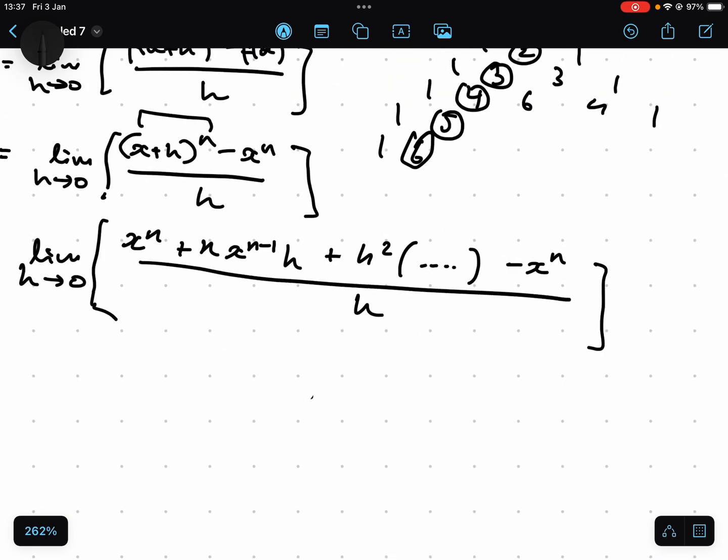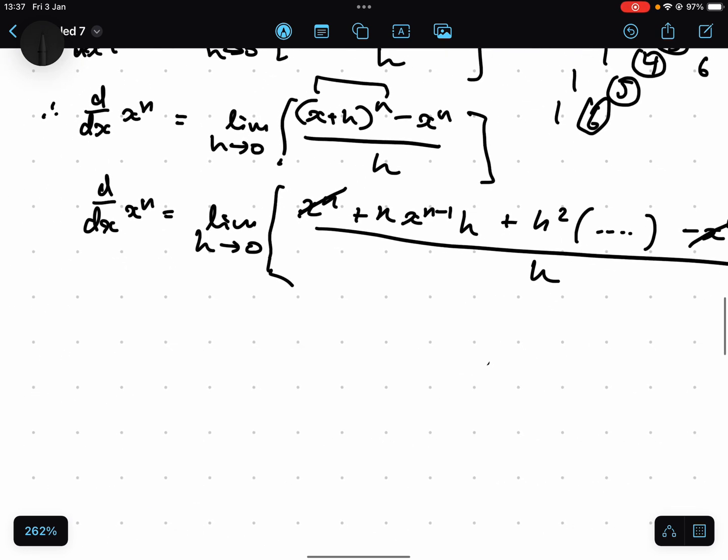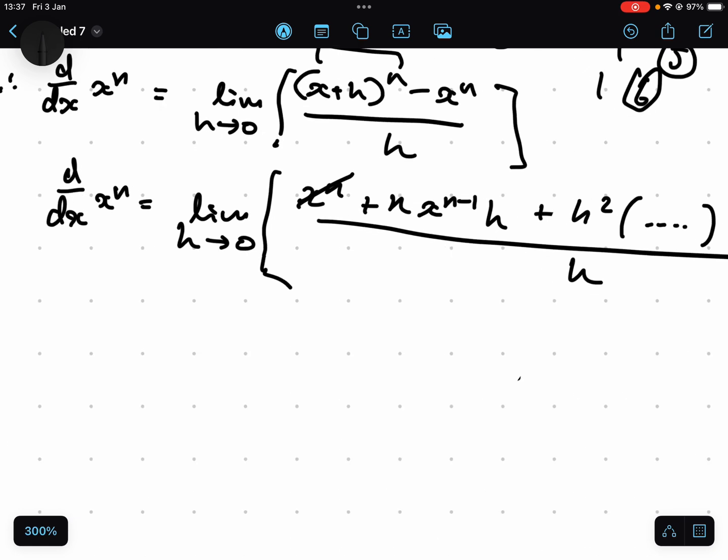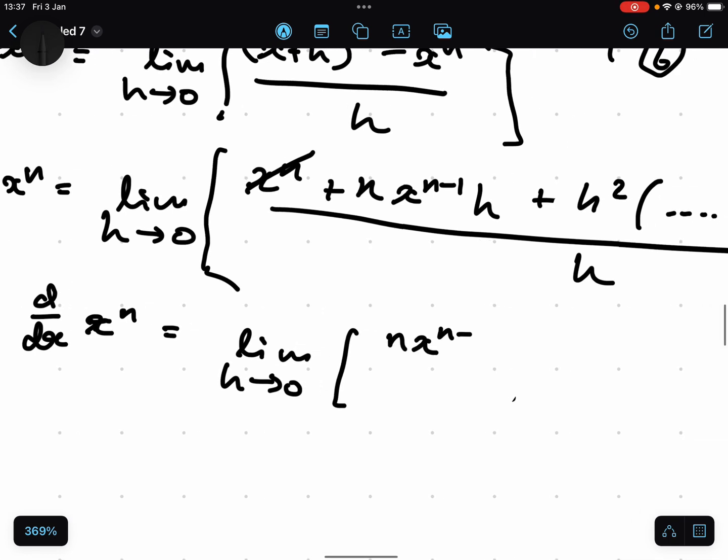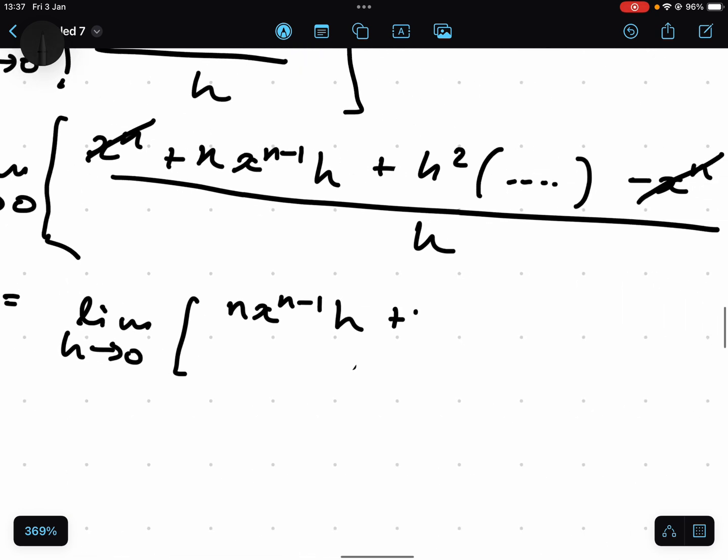Now, these x to the n's cancel. And we're literally just going to be left with this limit. nx to the n minus one h plus h squared times by a bunch of n. And you can probably see where this is going. It's all set out very nicely. These h's cancel. It cancels out with a square over here.